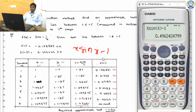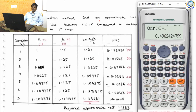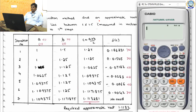Set up a table with columns: iteration number, a (negative value), b (positive value), c = (a + b)/2, and f(c). Store the averaging formula in the calculator as: alpha x = (alpha a + alpha b) / 2, so you can reuse it each iteration.